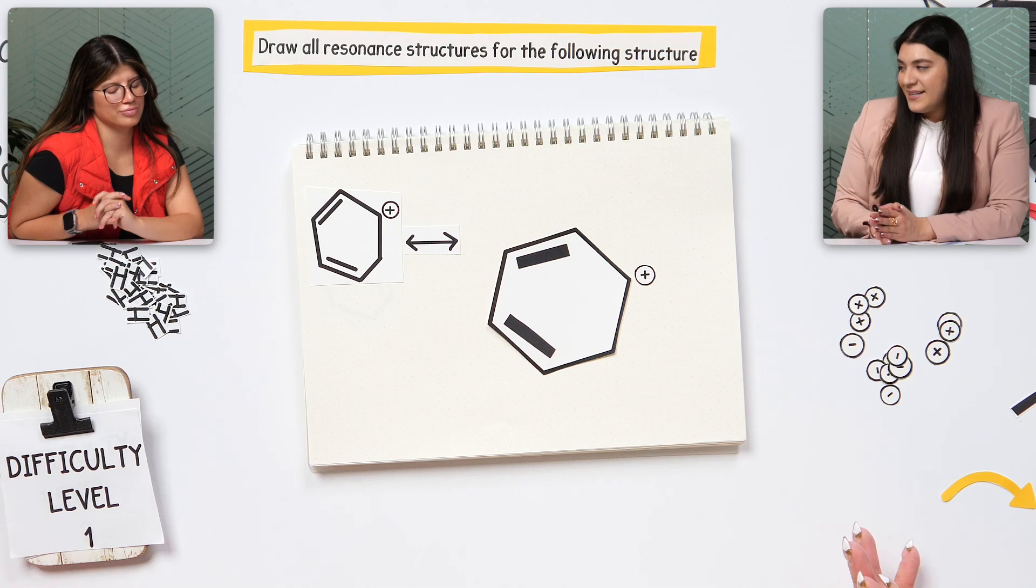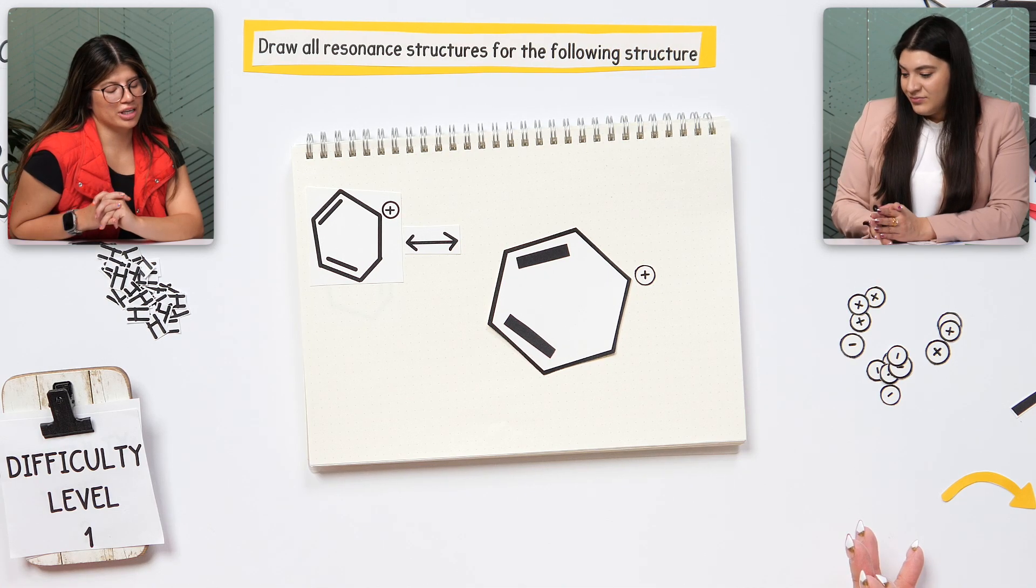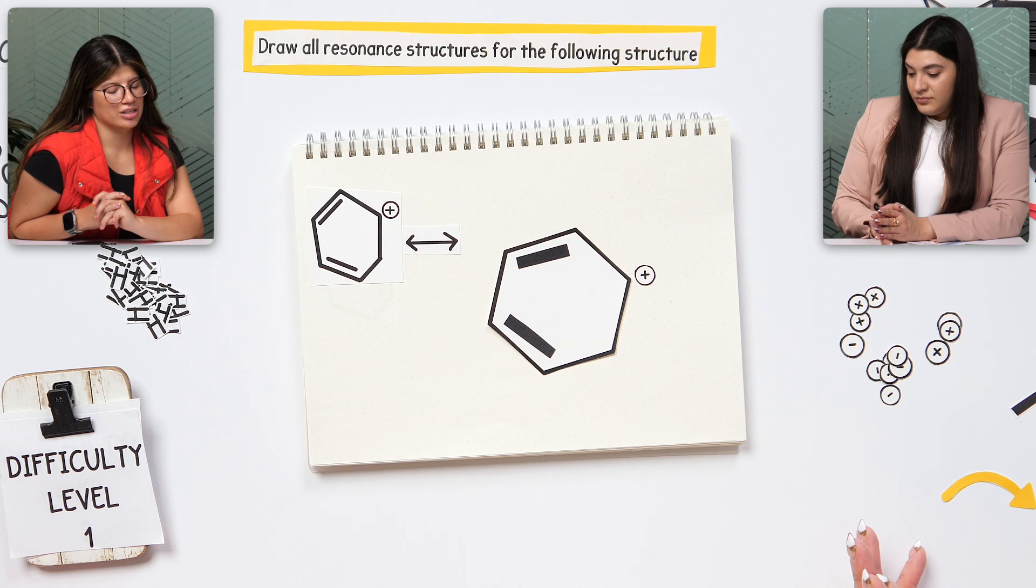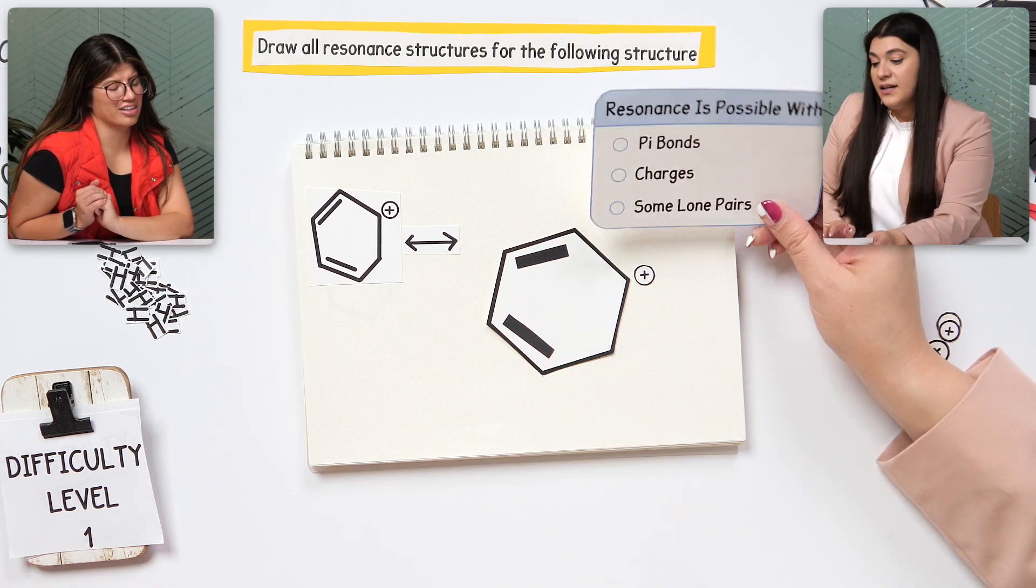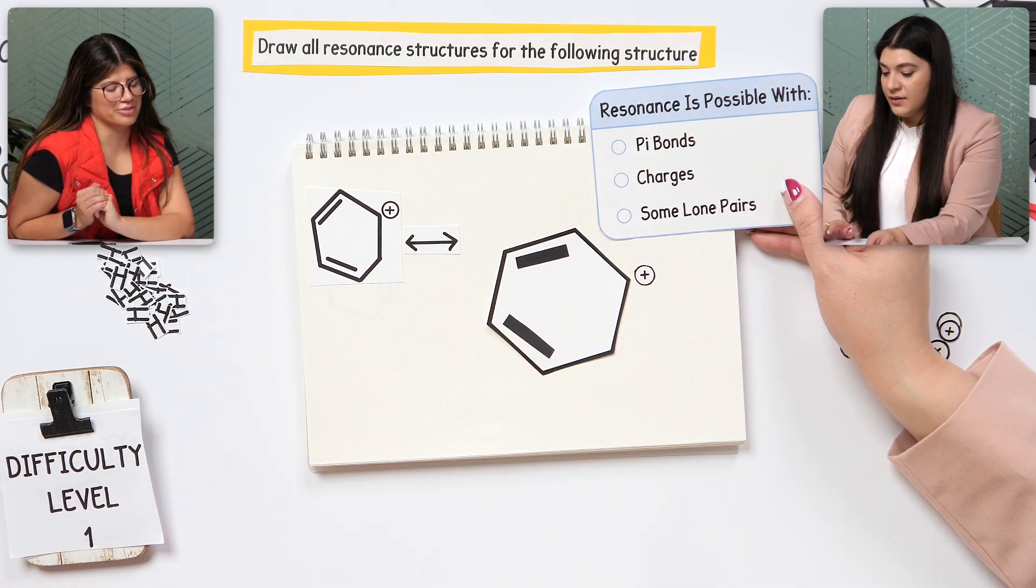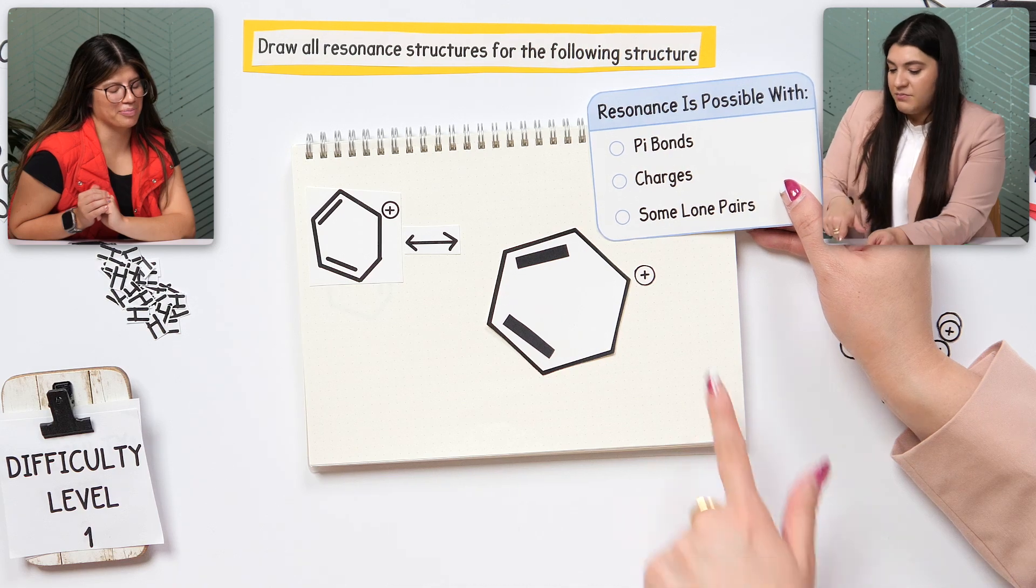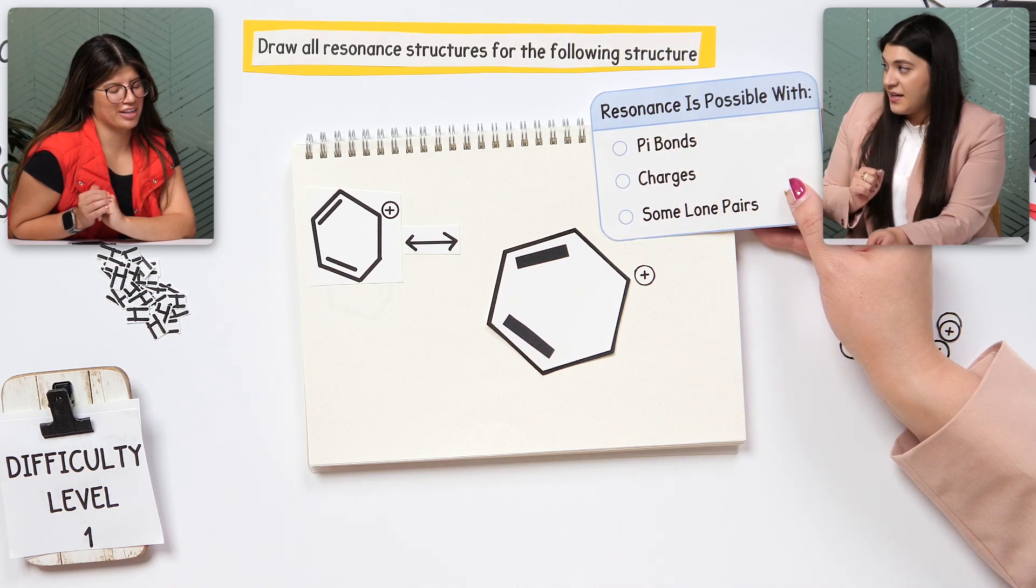Where can resonance take place? Only at the sp2s, which would be only here, right? So the sp2s and also the pi bonds, so that's double bonds, right? Charges, if there were lone pairs, then yes.